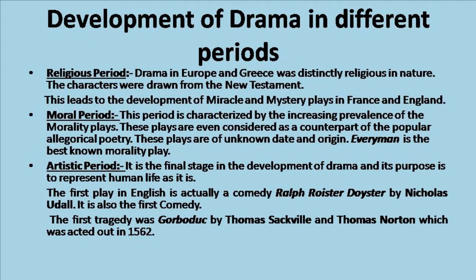The artistic period is the final stage in the development of drama and its purpose is to represent life as it is. The first play in English is actually a comedy: Ralph Roister Doister, written by Nicholas Udall. The first tragedy was Gorboduc, written by Thomas Sackville and Thomas Norton, which was acted out in 1562. The aim of this tragedy was to persuade Queen Elizabeth to marry and to show the danger to which England was exposed by the uncertainty of the succession.